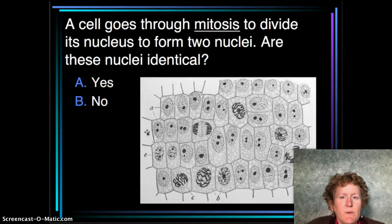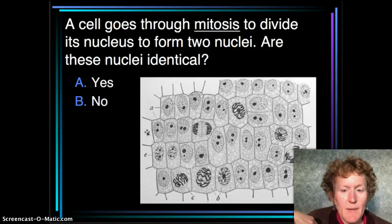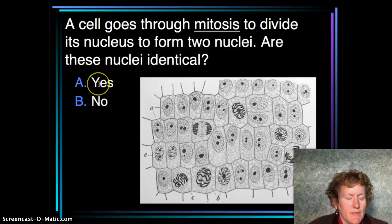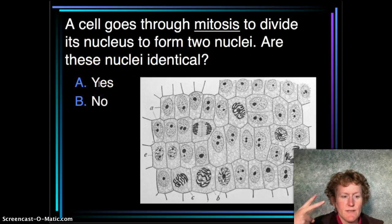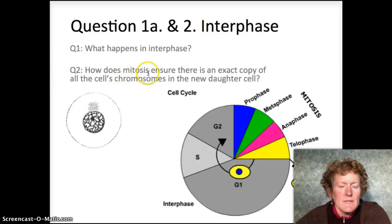A cell goes through mitosis to divide its nucleus to form two nuclei. Are these nuclei identical? We want two exact same copies of chromosomes — if you said yes, you're correct. We want two exact copies because we're trying to make two exact copies of the cell. Now for question two: how does mitosis ensure there's an exact copy of all the cell's chromosomes in the new daughter cell?